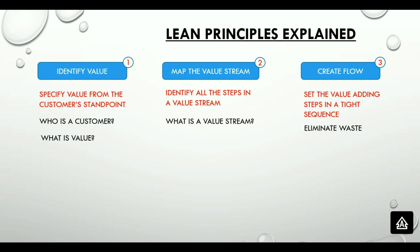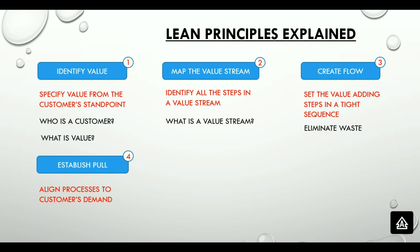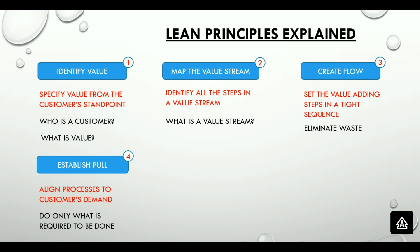Moving on to the next step in the lean cycle: establish pull. It indicates process alignment based on customers' demand and need of the hour. Customers call a help desk with a specific intention and expect specific value to be added to the conversation. In a contact center environment, call patterns are measured and forecasted to define appropriate call queues and routing algorithms. Agents' skill and scheduling is also taken into account to establish the right pull. The ultimate goal is to provide optimal customer value.